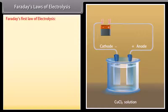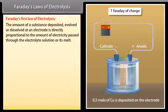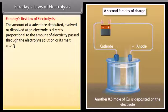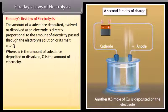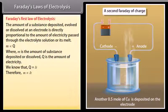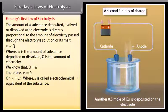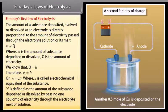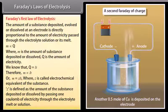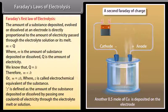Faraday's laws of electrolysis. Faraday's first law of electrolysis: The amount of a substance deposited, evolved, or dissolved at an electrode is directly proportional to the amount of electricity passed through the electrolyte solution or its melt. M is directly proportional to Q, where M is the amount of substance deposited or dissolved, Q is the amount of electricity. We know that Q equals I T, therefore M is directly proportional to I T. It can be written as M equals Z I T, where Z is called electrochemical equivalent of the substance. Z is defined as the amount of the substance deposited or dissolved by passing one coulomb of electricity through the electrolyte melt or solution.